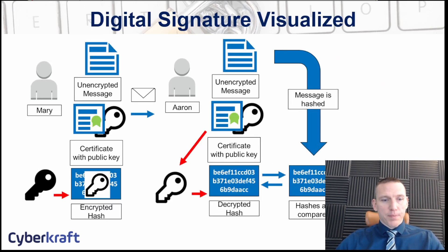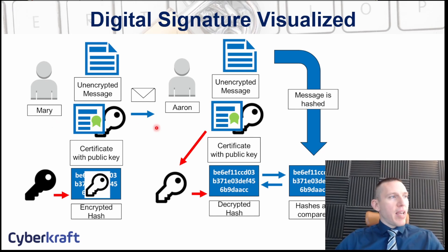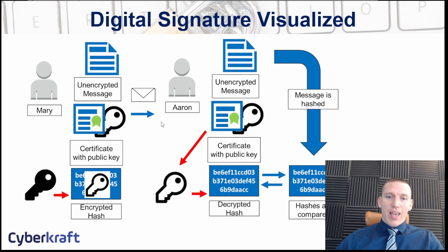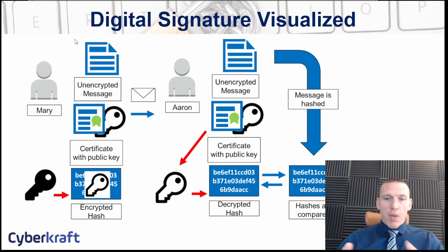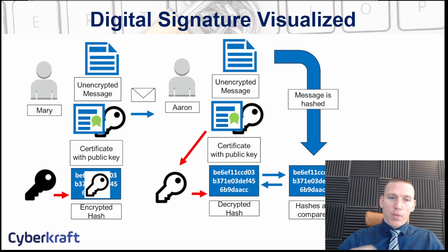Let's visualize this with a diagram. We have two individuals, Mary and Aaron, who want to communicate. Mary is going to use her private key and her public key to help communicate — her private key is shown in black and her public key in white. She starts with an unencrypted message, then includes a copy of her public key and a certificate, and takes her private key to create an encrypted hash of the message. She embeds that in the certificate along with the public key and sends it over to Aaron.